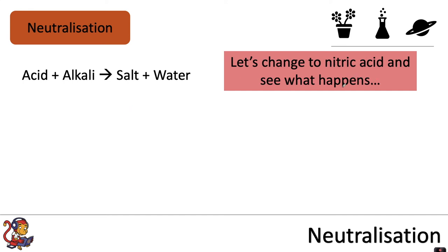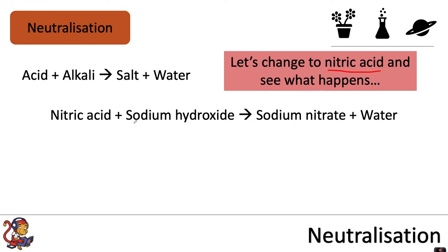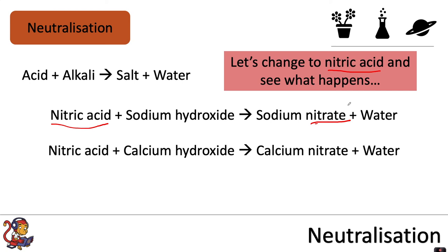We're going to look at a third acid you might have seen in the lab: nitric acid. Nitric acid plus sodium hydroxide makes sodium nitrate plus water. So nitric acids make nitrates. Nitric acid plus calcium hydroxide makes calcium nitrate plus water.